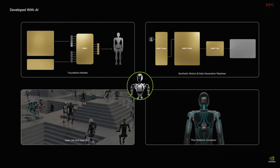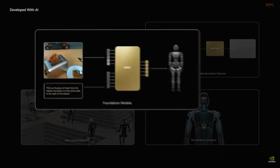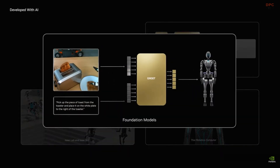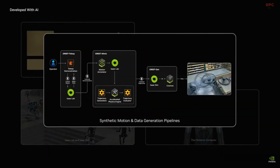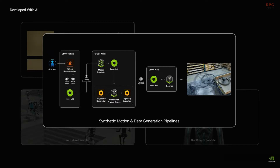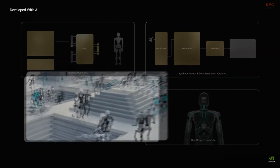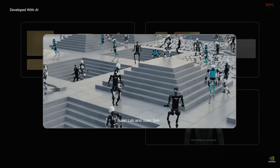NVIDIA Isaac Groot helps tackle these challenges, providing humanoid robot developers with four things – robot foundation models, data pipelines, simulation frameworks, and a Thor Robotics computer.